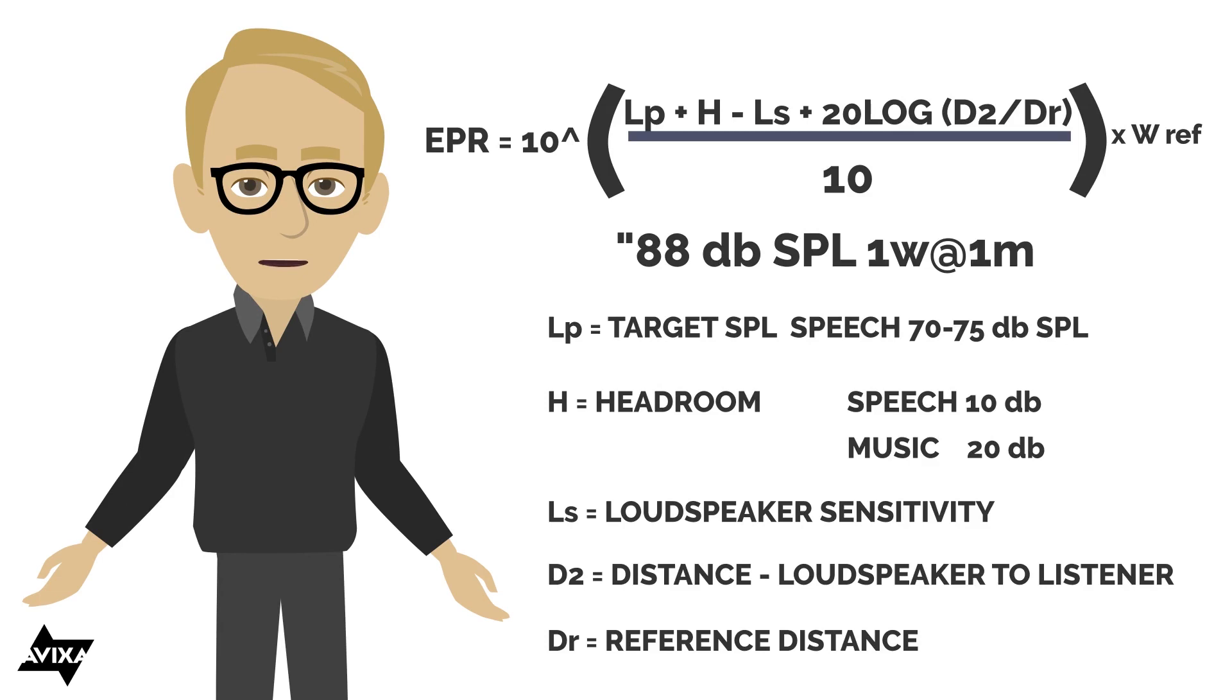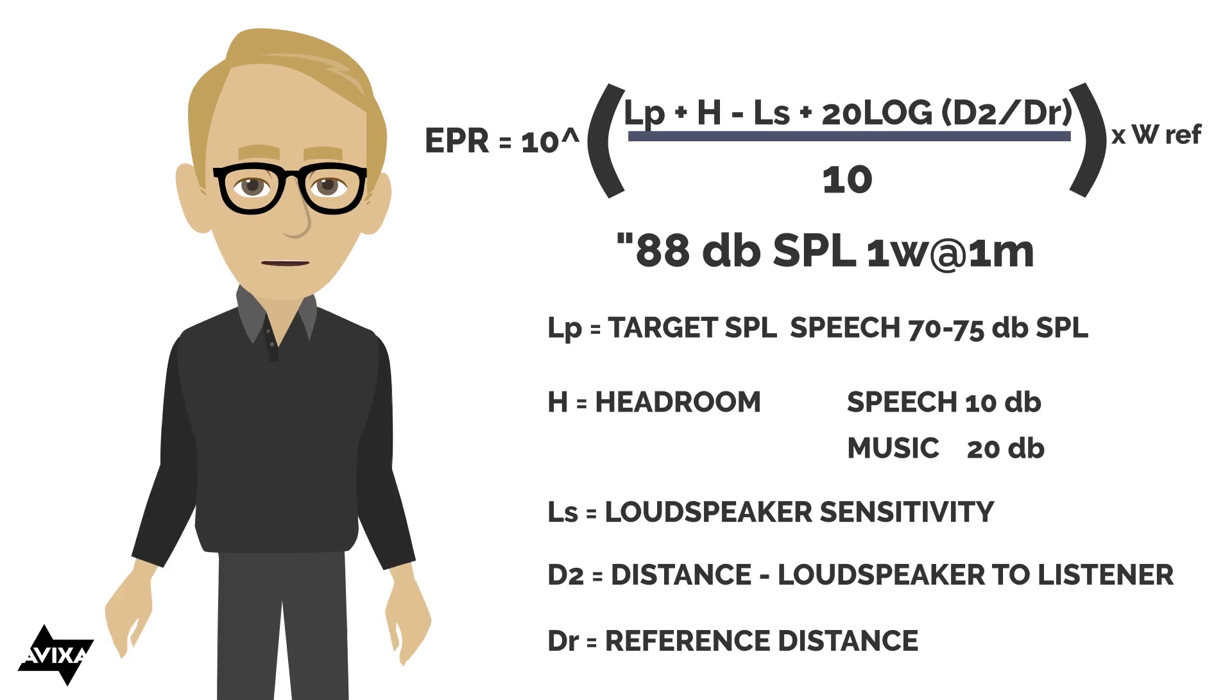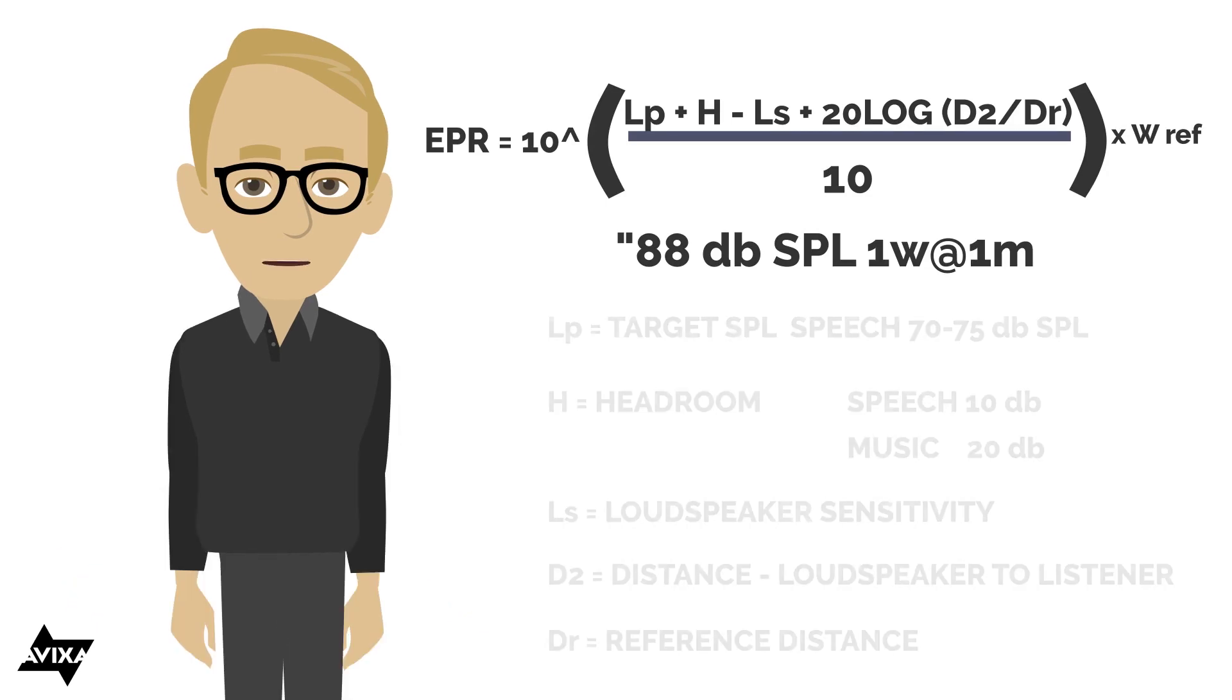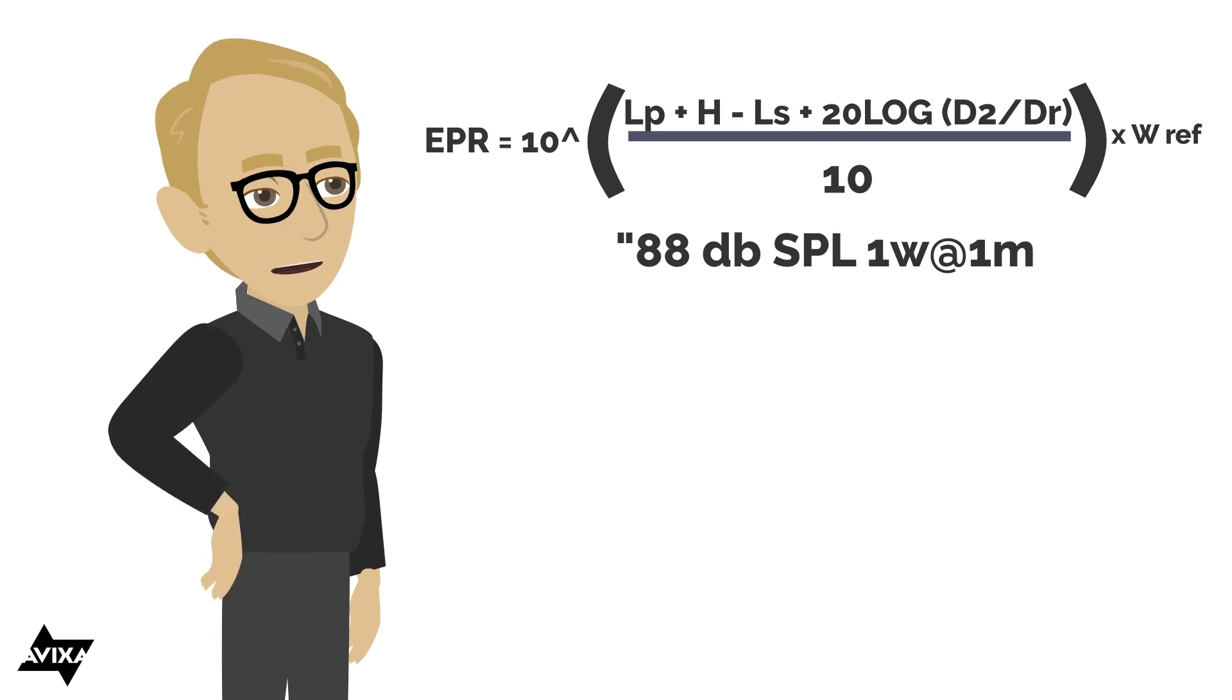It says here the reference distance is 1 meter. That's great if you're working in metric, but if you're using US customary units, you're going to have to convert that 1 meter to 3.28 feet. So I could phrase this differently: if I were doing US customary, I could say 88 dB SPL at 1 watt at 3.28 feet. So now that we have all this information, let's see how we can actually put this into the formula.